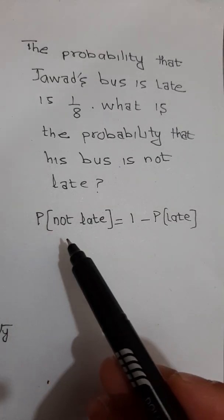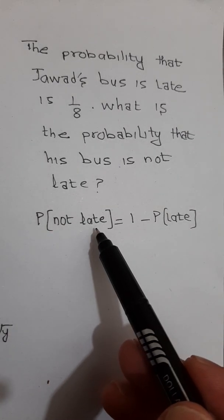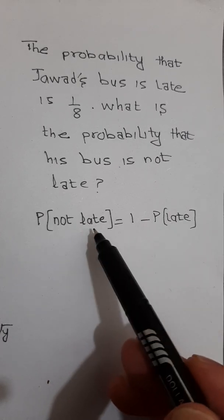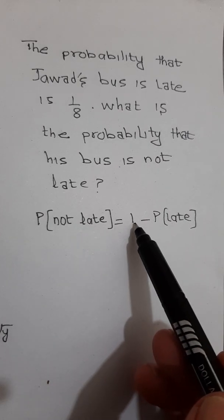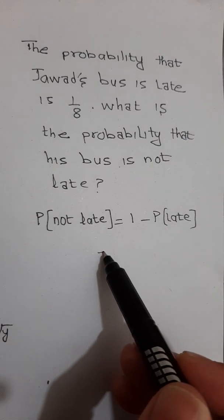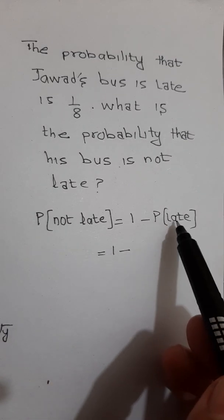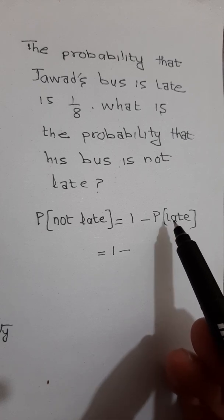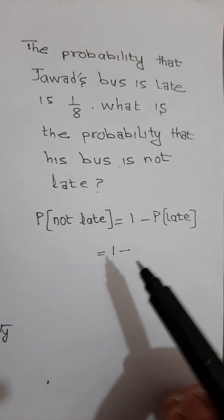So the probability of not late is equal to one minus probability of being late. The late probability is given as 1/8.